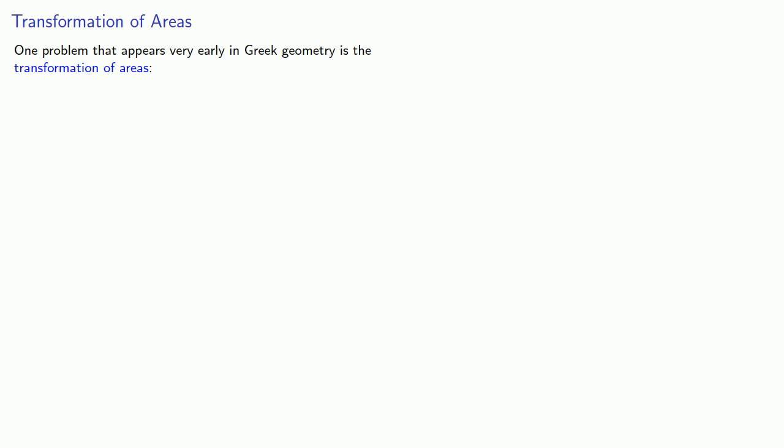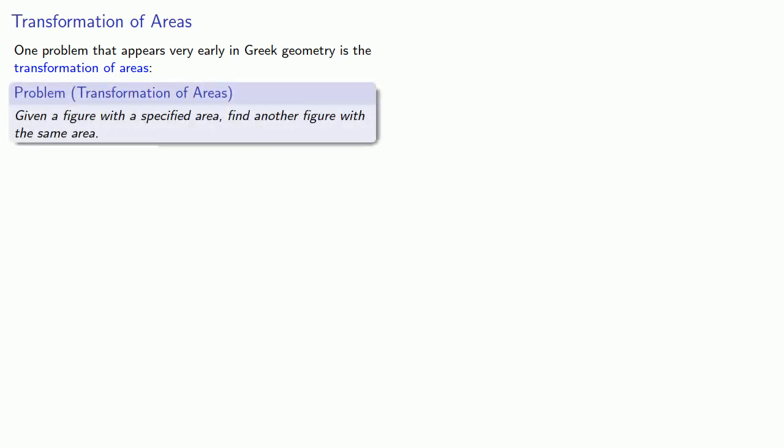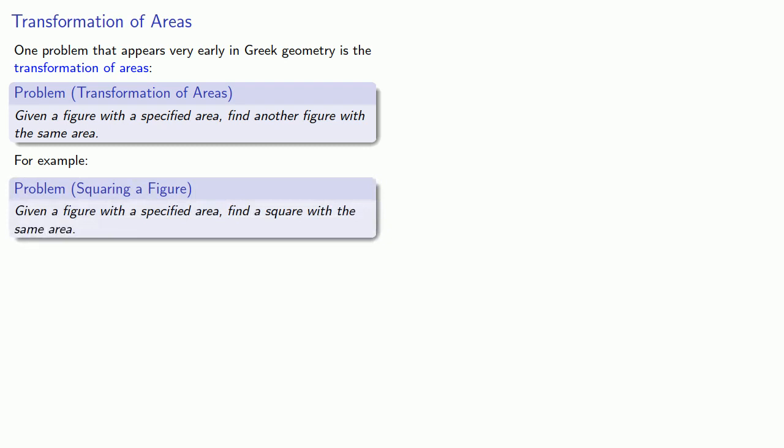However, there are some intriguing features about early Greek mathematics that suggest there may have been an Indian influence. One problem that appears very early in Greek geometry is the transformation of areas. The general problem of this format is: given a figure with a specified area, find another figure with the same area. For example, we might talk about squaring a figure - given a figure with a specified area, find a square with the same area. In fact, when people talk about the problem of squaring the circle, this is what they mean. What's interesting here is that this type of problem appears in Greek geometry, but it has no precursors in Mesopotamian or Egyptian mathematics.